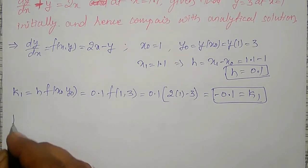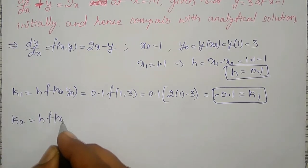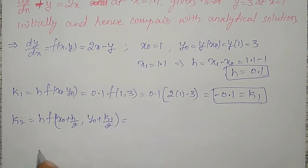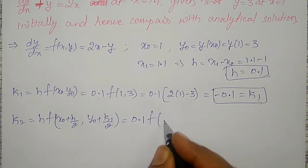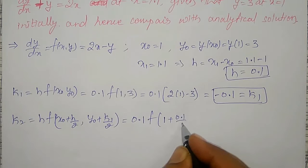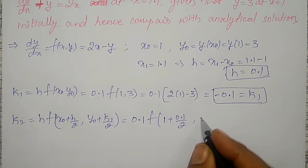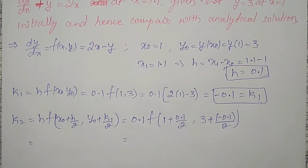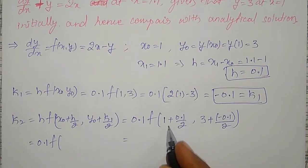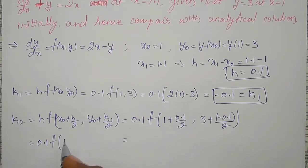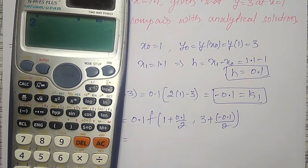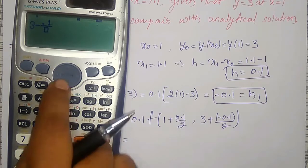Now I have to calculate k2. The formula is h into f(x₀ plus h/2, y₀ plus k1/2). Substituting: h is 0.1, x₀ plus h/2 is 1 plus 0.1/2, y₀ plus k1/2 is 3 plus (minus 0.1)/2. Simplifying x: 1 plus 0.05 equals 1.05. For y: 3 minus 0.1/2 equals 2.95.